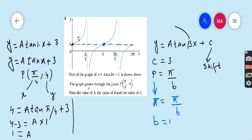So shift this 3 to the other side, it will be minus 3. Use your calculator to find the value of tan(π/4). Tan(π/4) is 1. 4 minus 3 is 1. A times 1. Hence the value of A is 1. Therefore, our final answer is: capital A equals 1, capital B equals 1, and capital C equals 3.